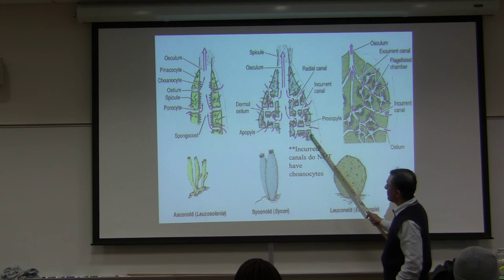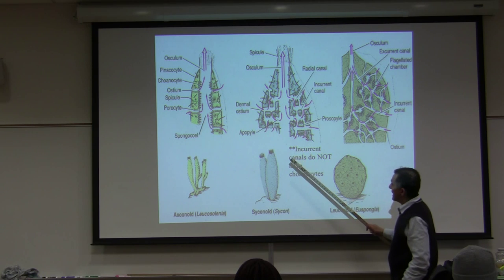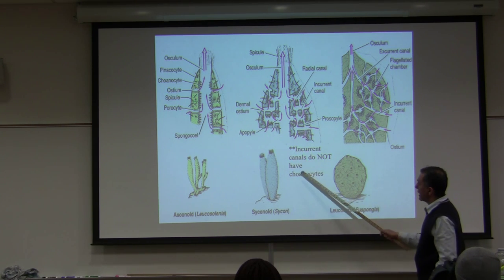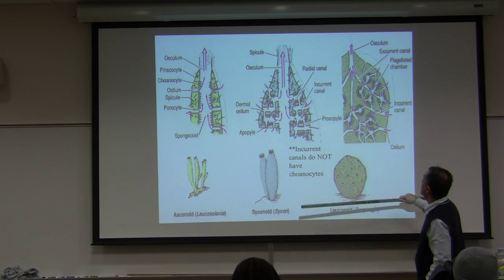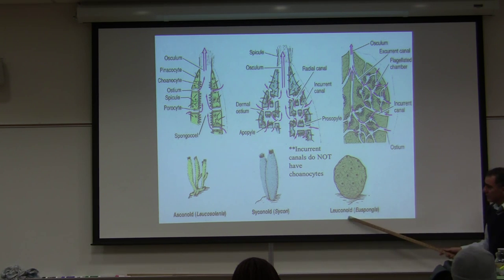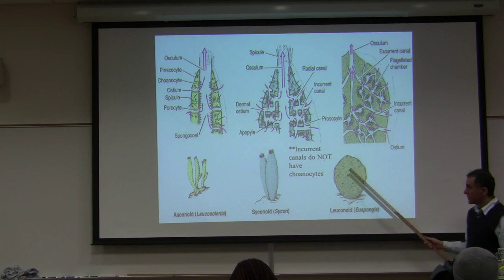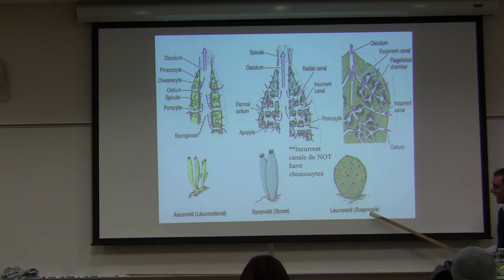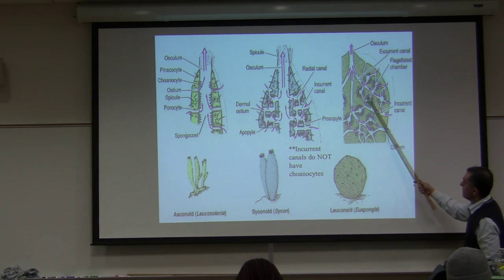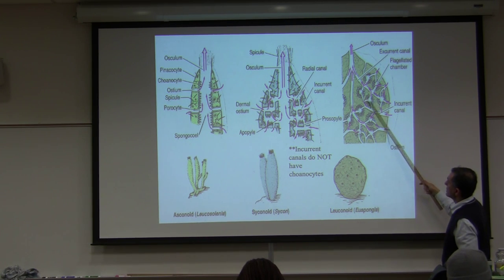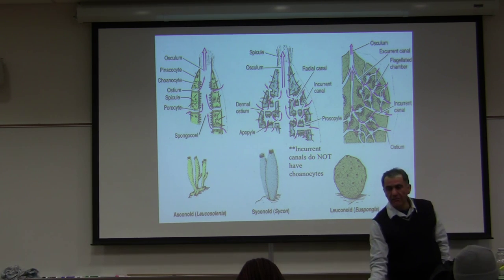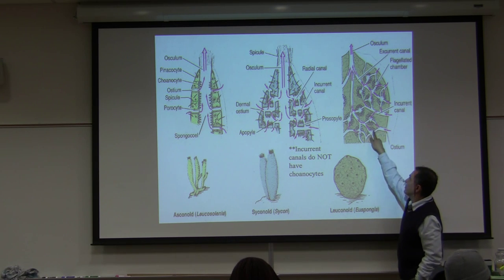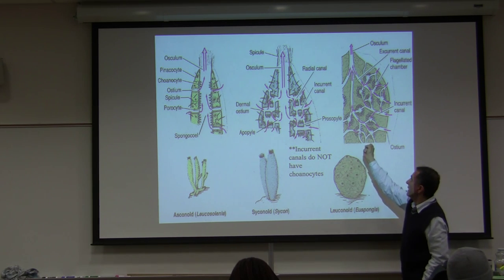Incurrent canals do not have choanocytes, meaning they are outside of the animal. Leuconoid is the most complex of the three. In pure sponges — like bath sponge — which is leuconoid, they have a chamber: water comes into the incurrent canal, goes into the chamber, gets filtered by choanocytes, and then gets out through the osculum.